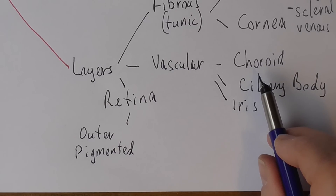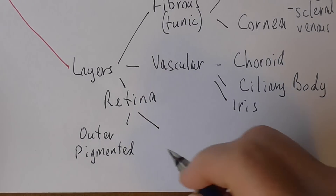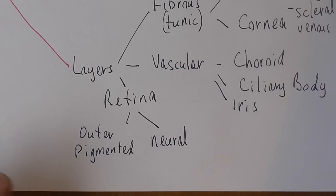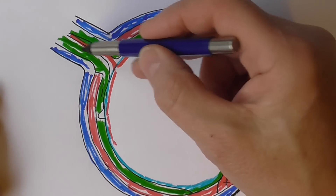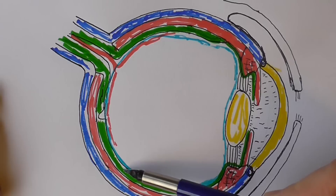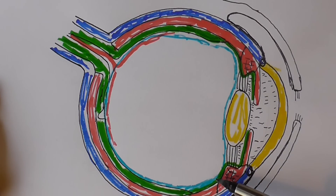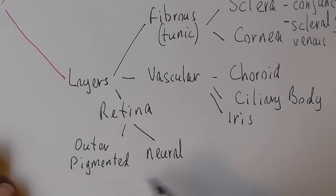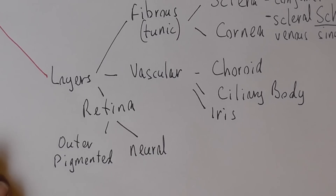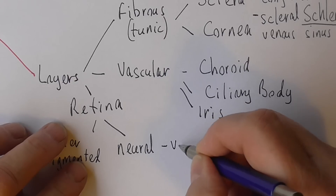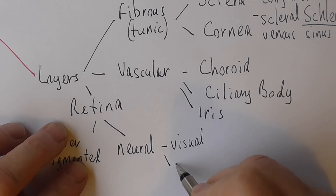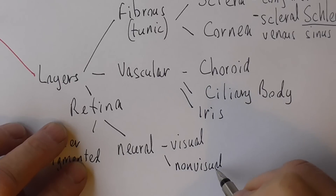On top of the pigmented layer we have the neural layer of the retina. As the name suggests, it's neural tissue — here we see the neural tissue in green. We notice the retina goes round and also behind the ciliary body and behind the iris. Both layers of the retina — the outer pigmented and the neural layer — do go around that whole area. We can subdivide the neural layer into the visual retina, sometimes called the optical retina, which contains the rod and cone cells that actually generate the vision, and there is a non-visual layer as well — it's still neural but it's non-visual.